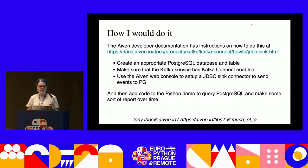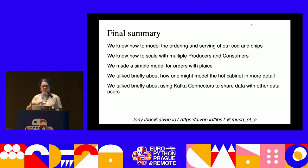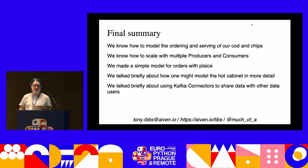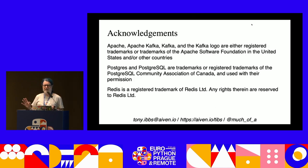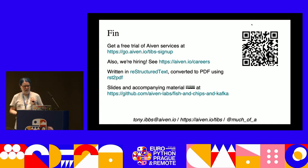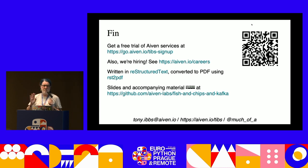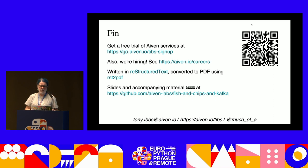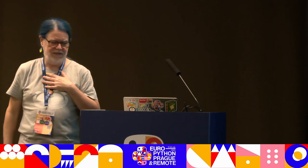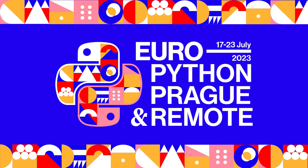We've covered all the demos, talked briefly about modeling the hot cabinet which you can try later, and touched on using Kafka Connect to share data. All these products have registered trademarks which I wish to acknowledge. If you want to use Aiven, you get a month and $400 worth of credit to play with Kafka without setting it up on your laptop. We are hiring. The QR code will take you to the GitHub repository. Thank you very much.